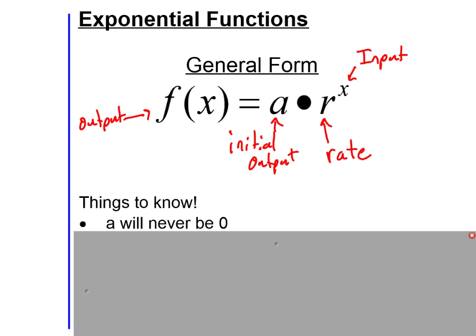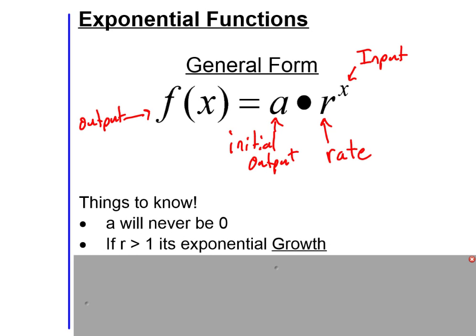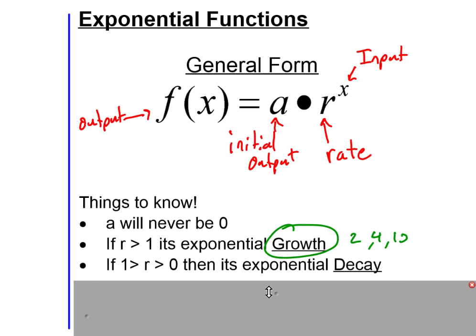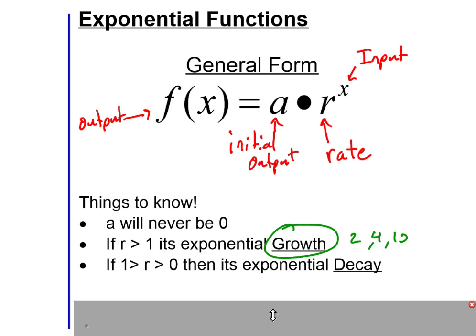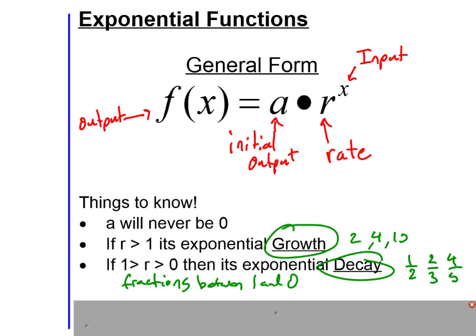Things to know about exponential functions: a will never be zero — if it were, all outputs would be zero. If r is greater than one, we call this growth, meaning outputs in the table grow in size. If r is less than one but greater than zero — a fraction between zero and one — we call this decay. Examples include r = 1/2, 2/3, 4/5, and so on.